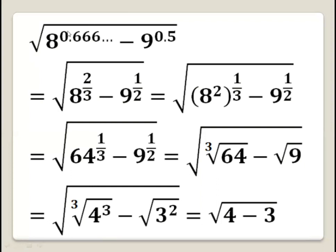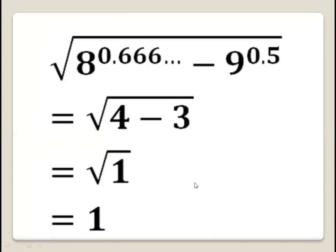Therefore, square root of 8 to the power 0.666 repeating, minus 9 to the power 0.5, equals square root of 4 minus 3, which is square root of 1, and equals 1.